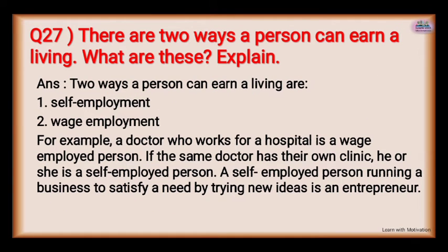There are two ways a person can earn a living — what are these? Self-employment and wage employment. For example, a doctor who works for a hospital is a wage employment person. If the same doctor has their own clinic, they are self-employed. A self-employed person running a business with a new idea is an entrepreneur.